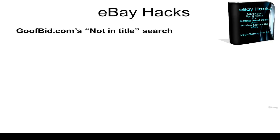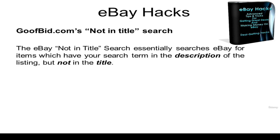A great way to find mislisted items on eBay is to use a not-in-title search, and a good tool for this is GoofBid.com. The eBay not-in-title search essentially searches eBay for items which have your search term in the description of the listing but not in the title. This would be a case where an amateur seller failed to put the most important keyword in the title — the keyword that drives all the traffic. You use a not-in-title search because it will search descriptions and not titles.